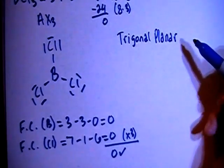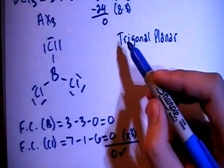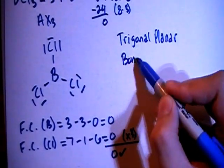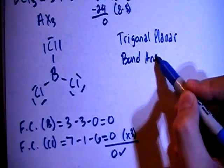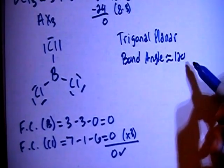So a trigonal planar, and when you have a trigonal planar shaped molecule or compound, the bond angle should be approximately 120 degrees.